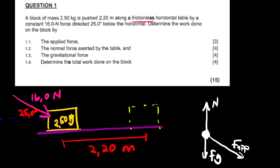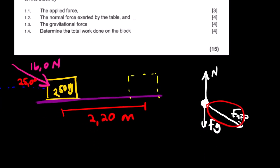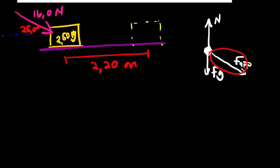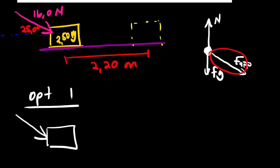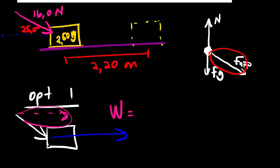For the first question we are looking for the work done by the applied force. We have two options — let us start with option one. The component of this force is not parallel to the displacement; the displacement is in this direction and the angle between the applied force and the displacement is not zero. So we find the x-component of the force and use the equation: work equals force times displacement times cos θ.